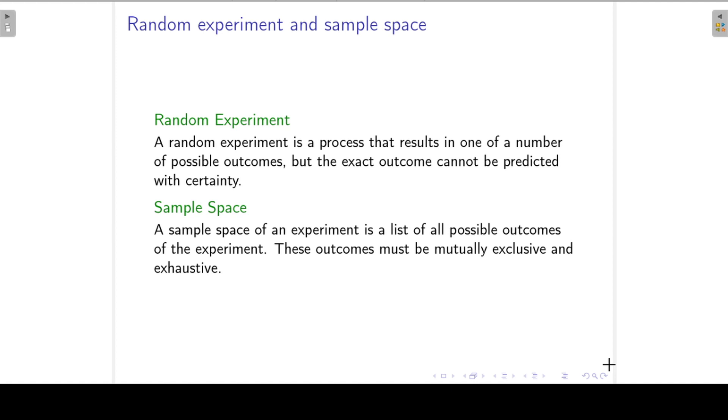Now in this lecture we are going to look at a few definitions when we work with probability. First of all, a random experiment is a process that results in one of a number of possible outcomes but the exact outcome cannot be predicted with certainty. The sample space of an experiment is a list of all the possible outcomes of the experiment. These outcomes must be mutually exclusive and exhaustive. That just means that these outcomes cannot occur simultaneously and that they encompass the entire range of possible outcomes.